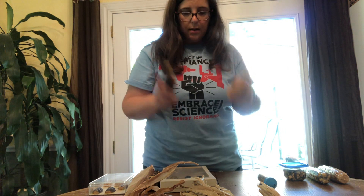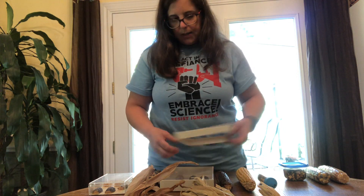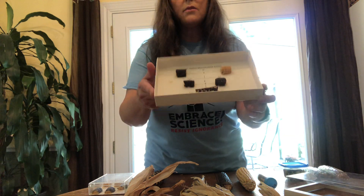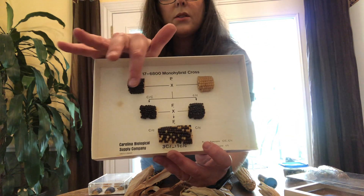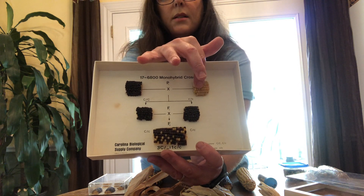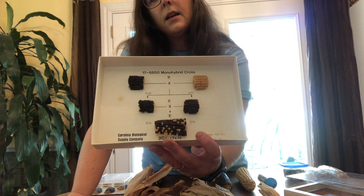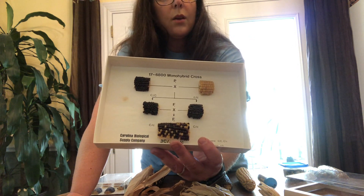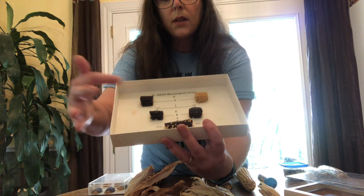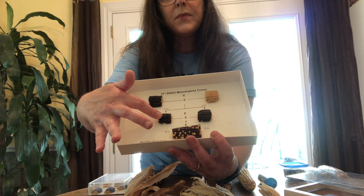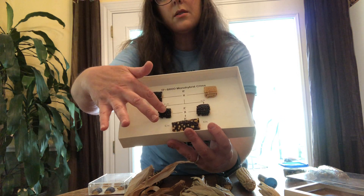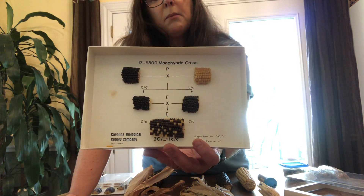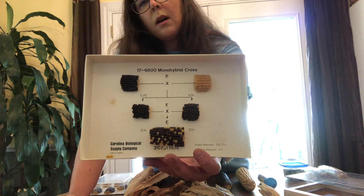We're going to be working with these two as the parentals — pigmented versus non-pigmented. If you follow that cross in a monohybrid cross — I'm going to take the plastic off so it's easier to see — we have our dark pigmented parental and our non-pigmented parental. When we cross those two parentals, just like in any monohybrid cross, we wind up with a hybrid F1 generation that looks 100% like one parent, showing the dominant phenotype, which here is pigmented.